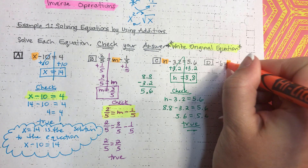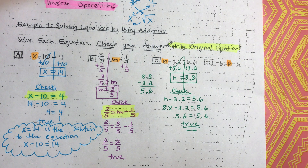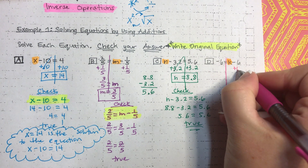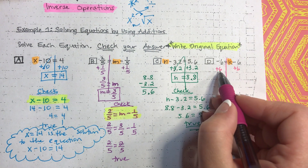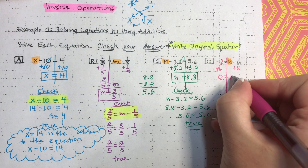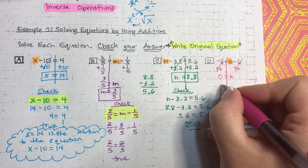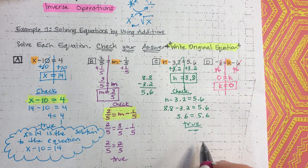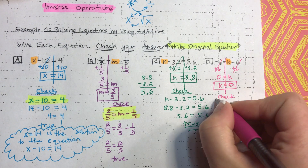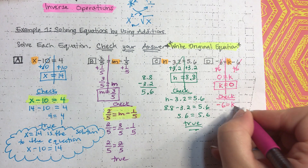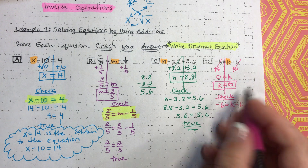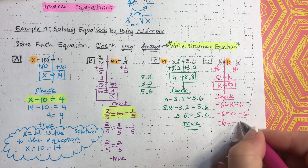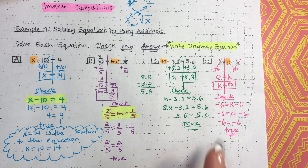For D, negative 6 equals K minus 6. We're trying to isolate K and get it by itself. To do that, we do the inverse operation of negative 6, which is to add positive 6 to both sides. Simplifying: negative 6 plus 6 is 0, so 0 equals K. Using the symmetric property of equality, K equals 0. Let's check: write the original equation, negative 6 equals K minus 6, then substitute 0 in for K. We get negative 6 equals 0 minus 6, which simplifies to negative 6 equals negative 6 — a true statement. So, K equals 0 is the solution.